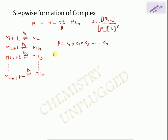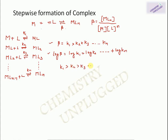One key relationship is: log βn = log K1 + log K2 + … + log Kn. The general tendency is K1 > K2 > … > Kn, meaning the stepwise formation constants decrease with each successive ligand attachment. There are, however, a few exceptions.